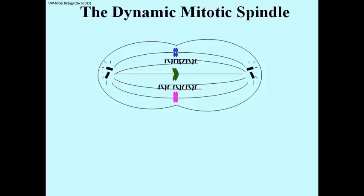There are two kinds of microtubules in this structure. There are microtubules attached to the centromeres via proteins that assemble at the centromeres called the kinetochore. The kinetochore is where microtubules attach to the centromeres of chromosomes.